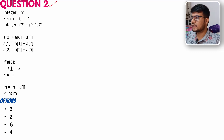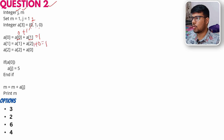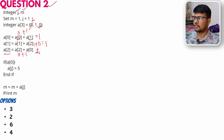Question 2: Integer j and m. Set m = 1, j = 1. Array of 3 values: [0, 1, 0]. Array[0] = Array[0] + 1 = 1. Array[1] = 1 + 0 = 1 (it stays 1). Array[2] = Array[2] + Array[1] = 0 + 1 = 1, not 2. Watch these small off-by-one details carefully.